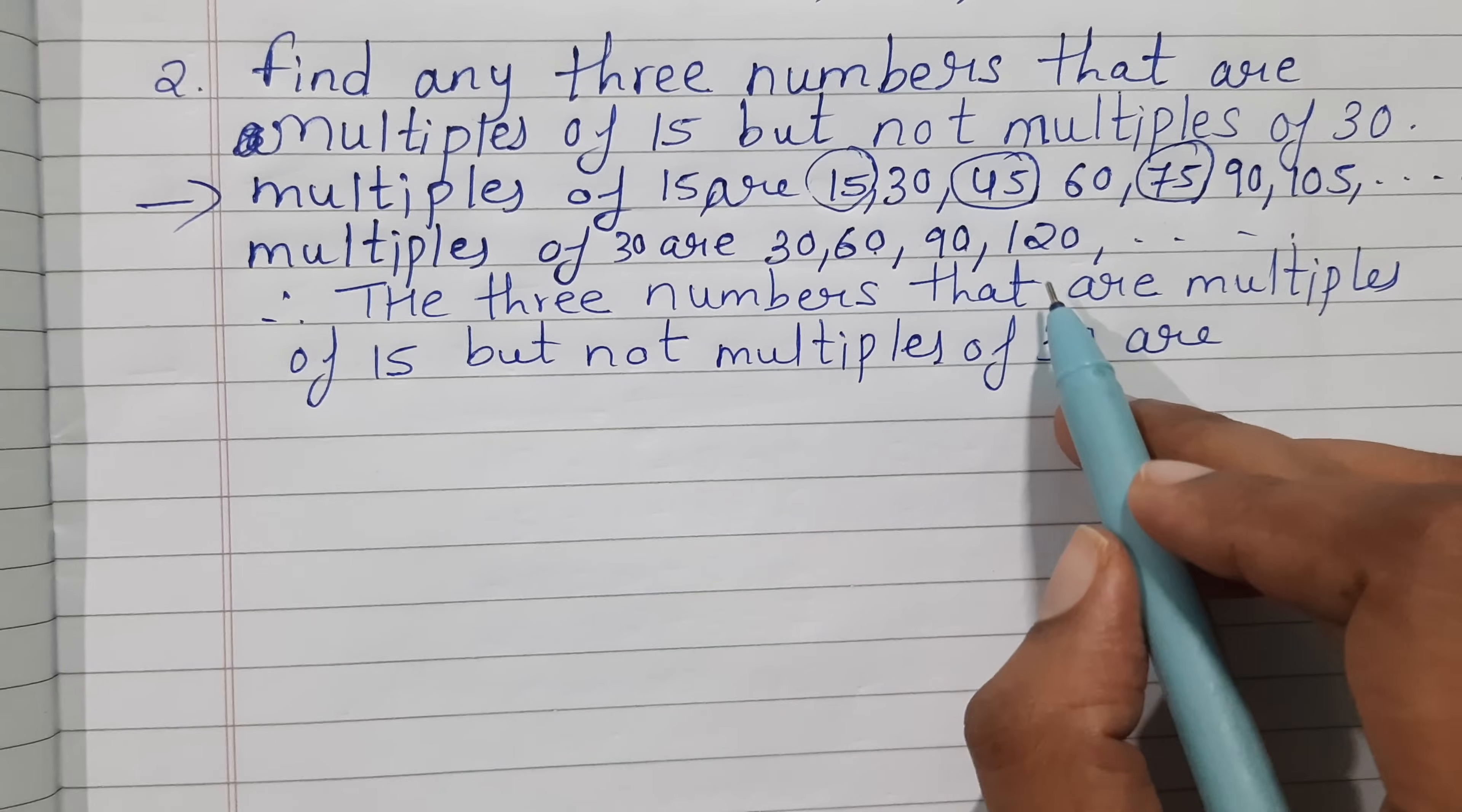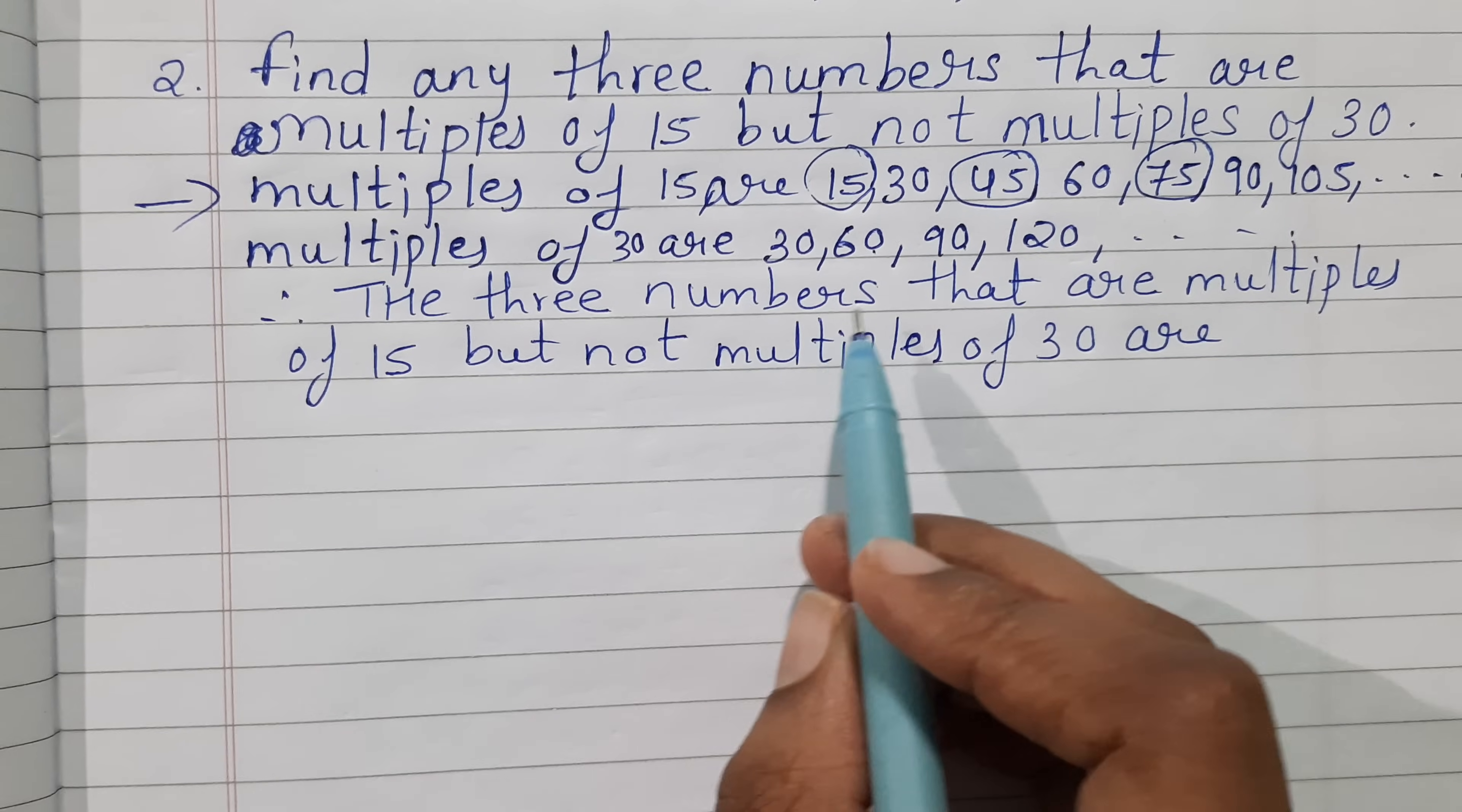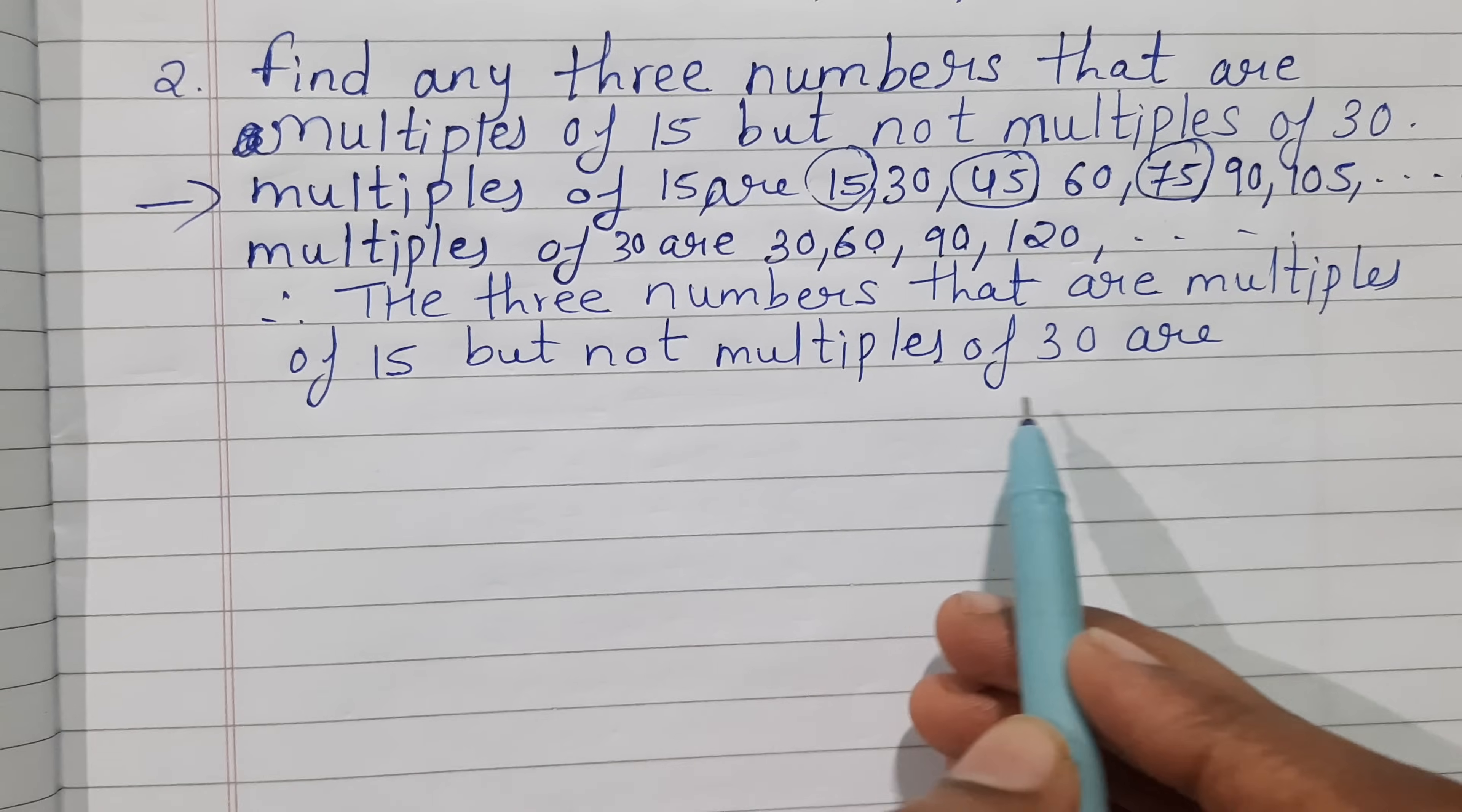So the three numbers that are multiples of 15 but not multiples of 30 are: you can write down 15, 45, and 75.